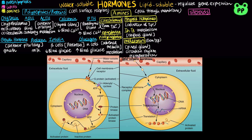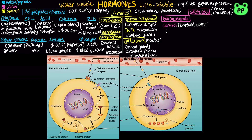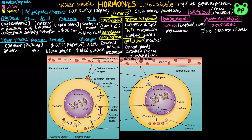All steroid hormones are derived from cholesterol and are lipid-soluble. Glucocorticoids are a class of corticosteroids that includes cortisol, which is secreted by the adrenal cortex and functions in regulating metabolism in response to long-term stress. Mineralocorticoids is another class of corticosteroids secreted by the adrenal cortex that includes aldosterone, which functions in regulating blood pressure and volume. Another class of steroids known as sex steroids or gonadocorticoids include androgens, estrogens, and progestins.